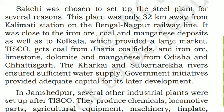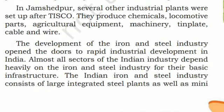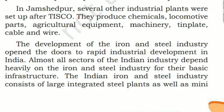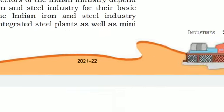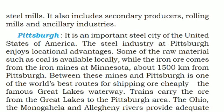TISCO gets coal from the Jharia coalfield, and iron ore, limestone, dolomite, and manganese from Odisha and Chhattisgarh. The Kharkai and Subarnarekha rivers ensure sufficient water supply, and government initiatives provided adequate capital. Several other industrial plants were set up in Jamshedpur after TISCO, producing chemicals, locomotive parts, agricultural equipment, machinery, tin plate, cable, and wire. The development of the iron and steel industry opened the doors to rapid industrial development. The Indian iron and steel industry consists of large integrated steel plants as well as mini steel plants, secondary producers, rolling mills, and ancillary industries.